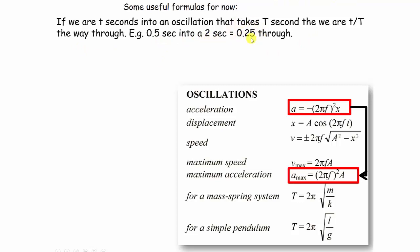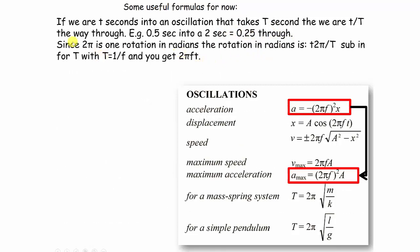Now if you've got your calculator set in radians, this will tell you how far along the sine curve or cos curve you are. Since 2π is one rotation in radians, the rotation in radians is t over T times 2π. If you substitute in the numbers for T and t, or if T is 1 over f, you get the formula 2πft.